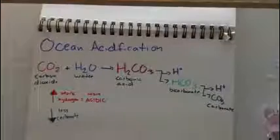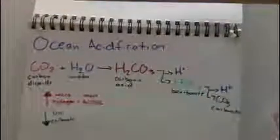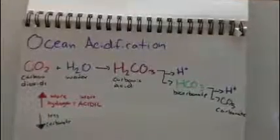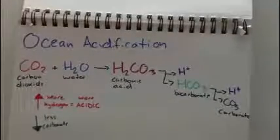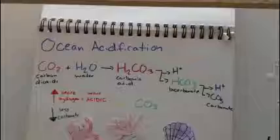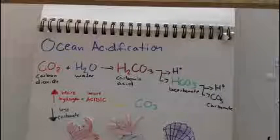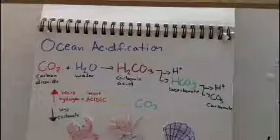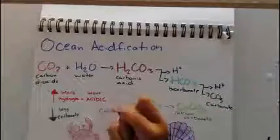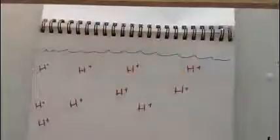The ocean's increase in acidity sets off a chemical reaction which then reduces the availability of carbonate ions. Species like crabs, coral, oysters, and other mollusks use a compound called calcium carbonate. Calcium ions and carbonate ions together create calcium carbonate. This compound is fundamental to the building of shells and skeletons.